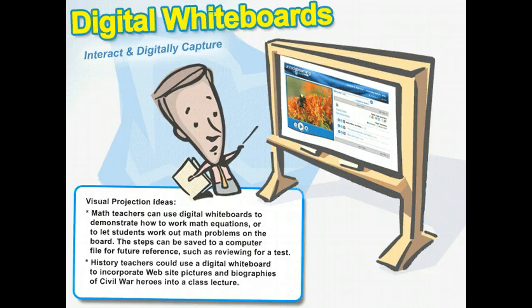Another type of digital projection is a digital whiteboard. While digital projectors let you project what is on a computer screen onto a wall, digital whiteboards allow you to interact with a computer and digitally capture everything you write on the board onto a computer.